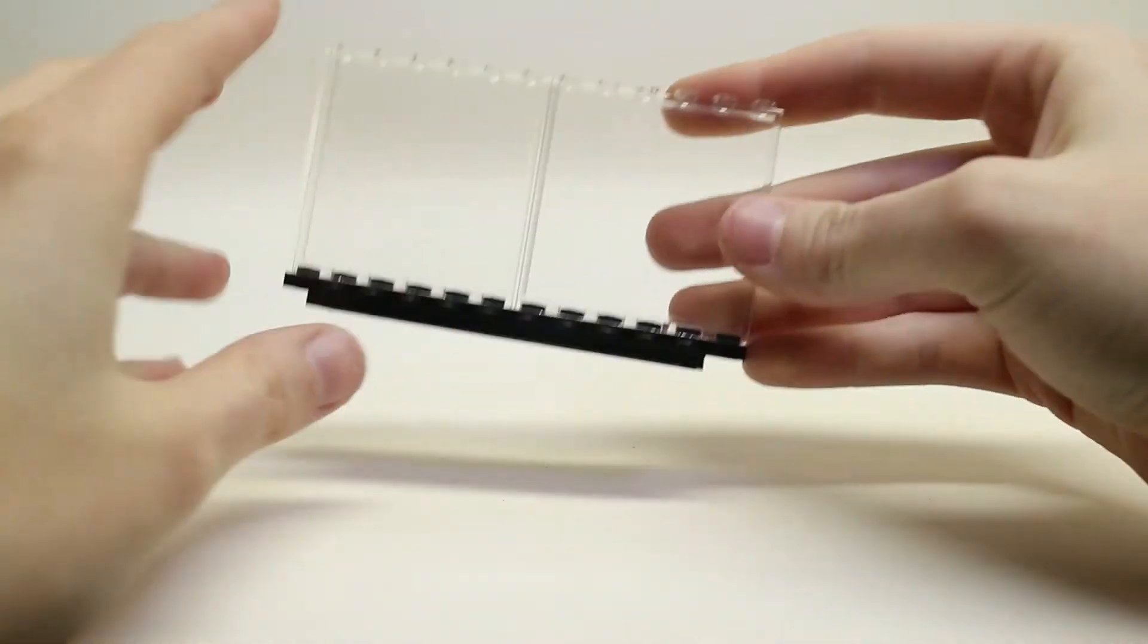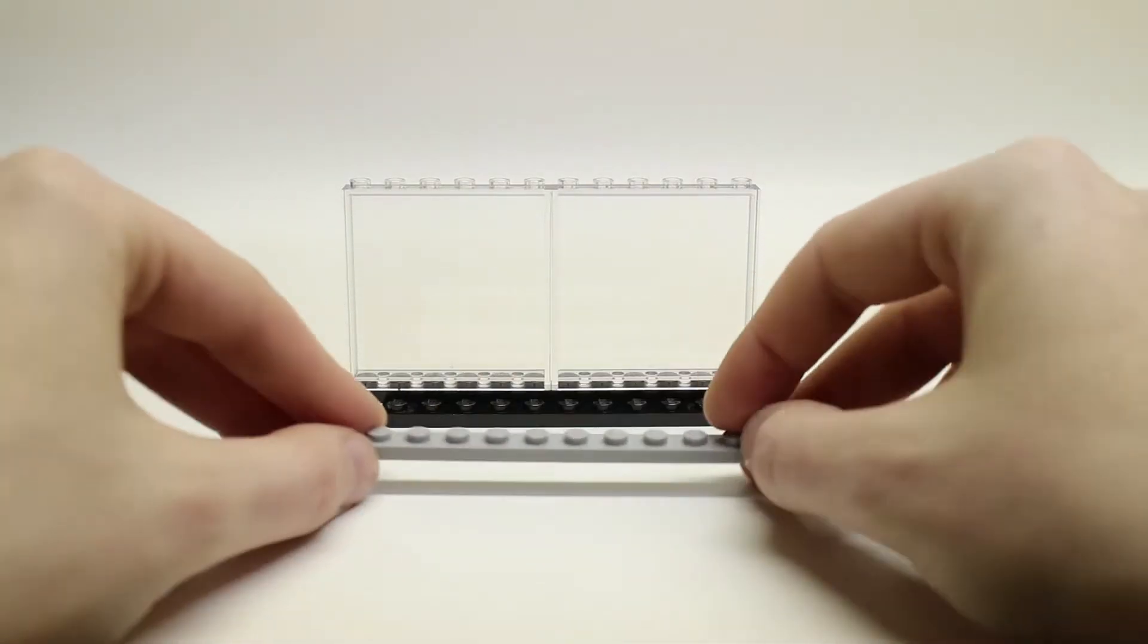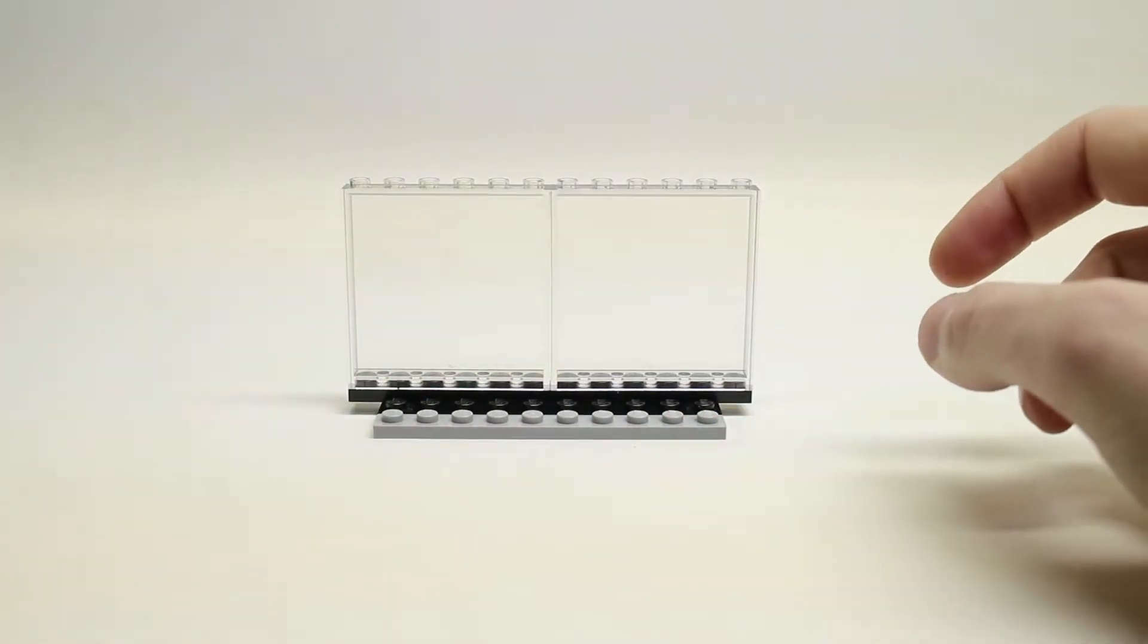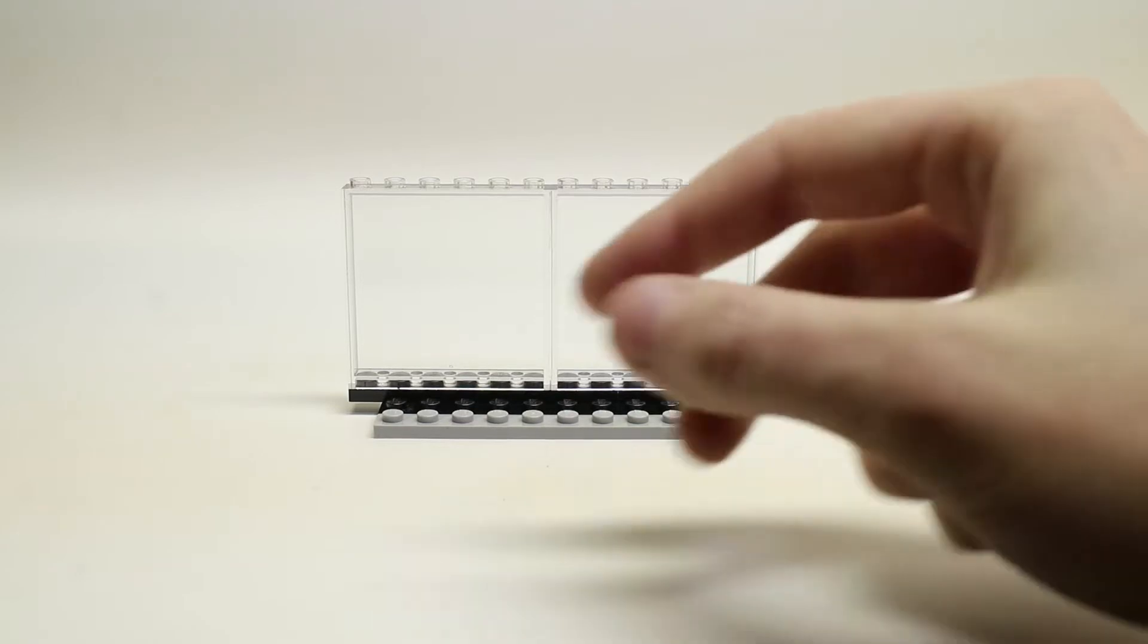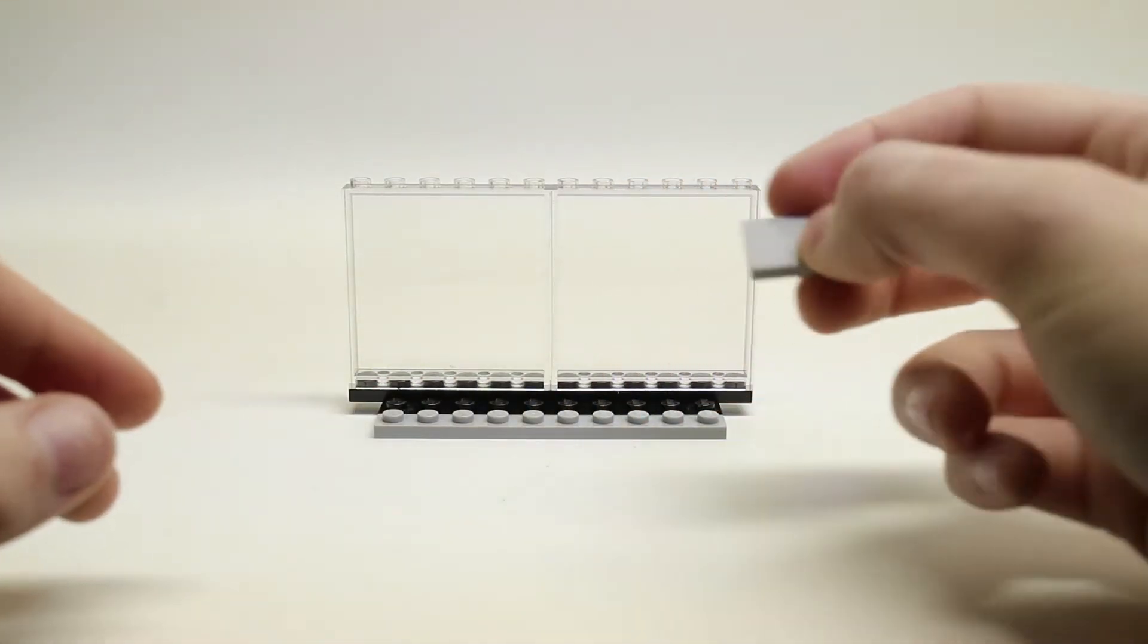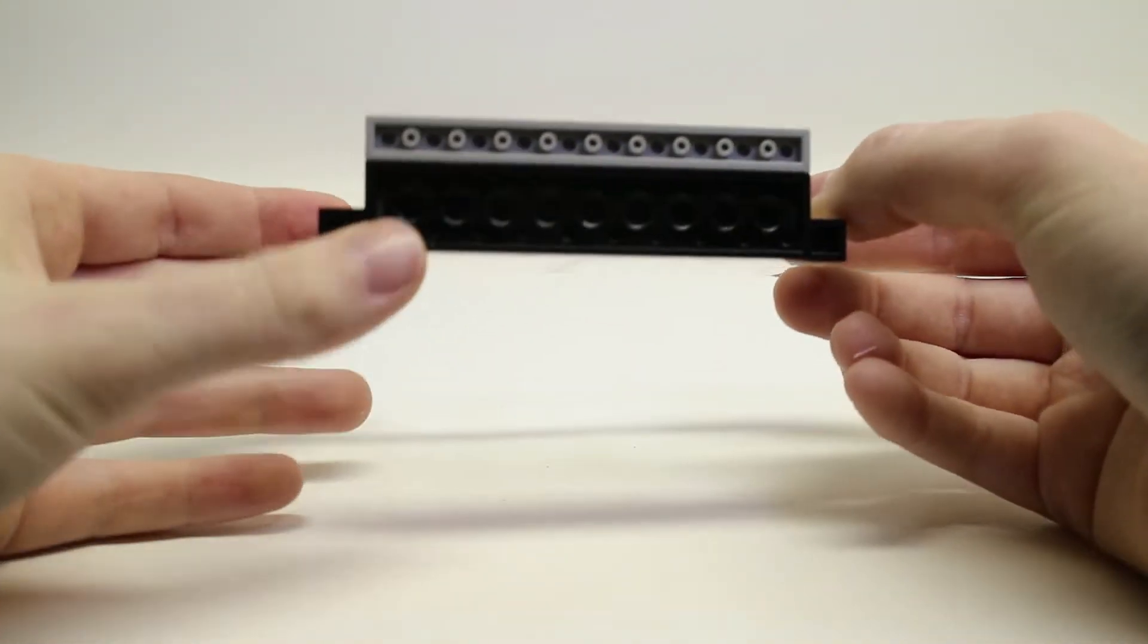Next you'll take your 1 by 10 light bluish gray plate and place it in front of the 2 by 10 black plate. And you will cover that whole area with 2 by 2 light bluish gray tiles.